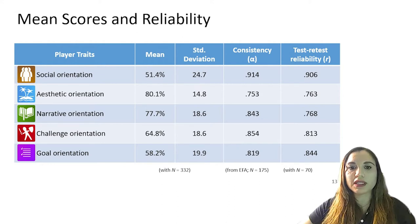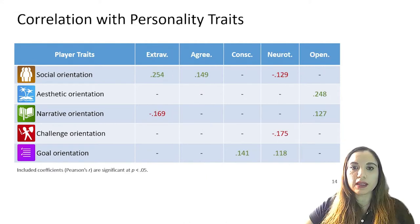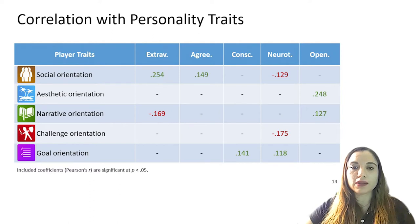A test-retest reliability of the 25-item scale was calculated to ensure it leads to similar scores each time a participant completes the survey. The results indicate the scale is stable, meaning a person is likely to obtain similar scores each time they take it, provided they still have similar preferences. A descriptive analysis showed that aesthetic orientation and narrative orientation are the strongest player traits overall. A correlation analysis between traits and personality indicates a negative correlation exists between narrative orientation and extroversion, suggesting that more introverted players tend to enjoy games with strong narratives and stories. Social orientation is correlated with extroversion and agreeableness, indicating that extroverted and agreeable people would be more inclined to play together with others.